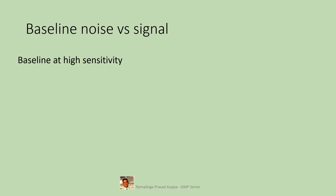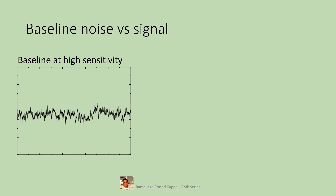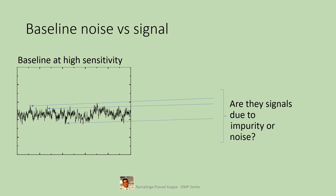In this example, the baseline is shown at high sensitivity scale. Notice the pattern — this is not a straight line but a zigzag pattern. There are several signals, some above the center of the pattern and some below the center. The question is: which is signal due to impurity and which is noise?